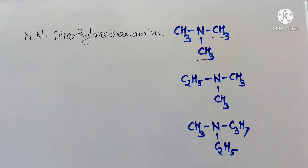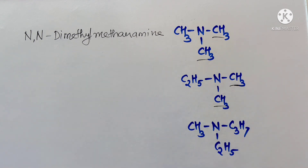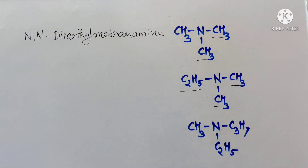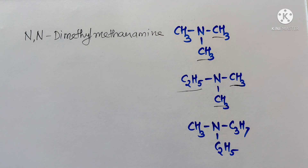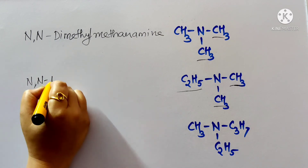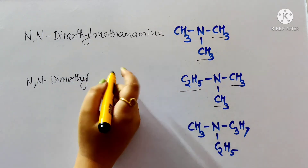For a tertiary amine with one ethyl and two methyl groups, the common name is ethyldimethylamine. For the IUPAC name, the two methyl groups are N,N-substituents and ethyl is the parent (ethanamine), giving N,N-dimethylethanamine.